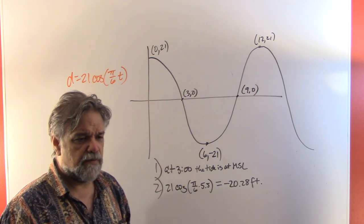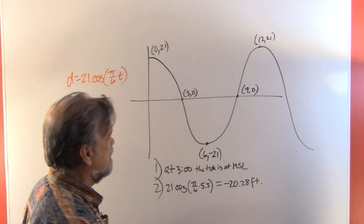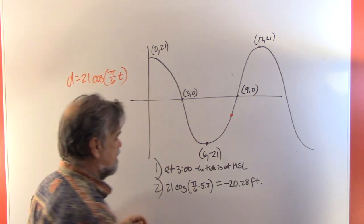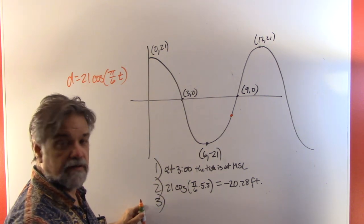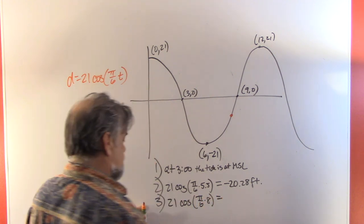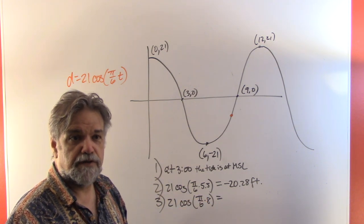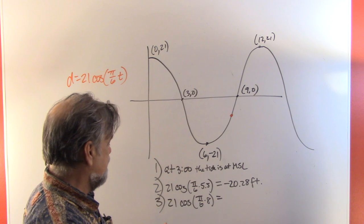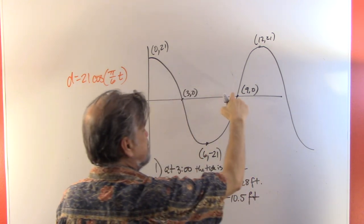For 8 p.m., t = 8: 21 × cos((π/6)(8)) = 21 × cos(8π/6) = 21 × cos(4π/3). The cosine of 4π/3 is −1/2, so 21 × (−1/2) = −10.5 feet. Sure enough, it's about halfway down toward low tide — negative 10.5 feet.